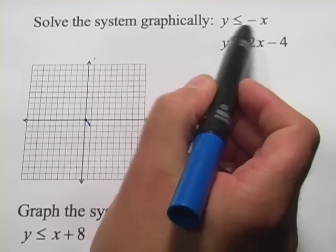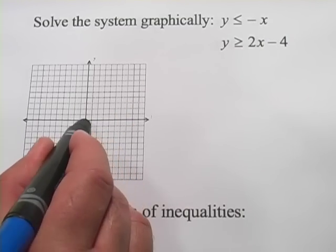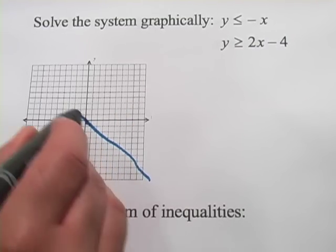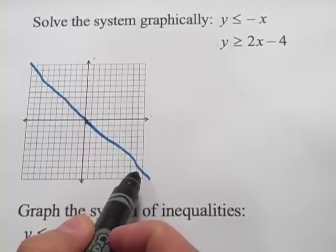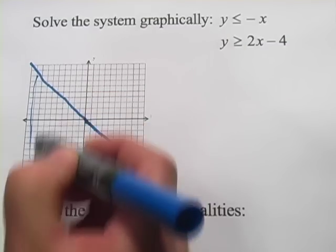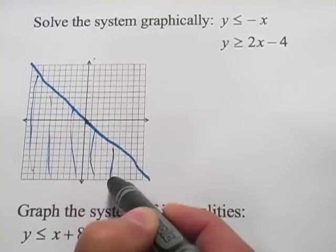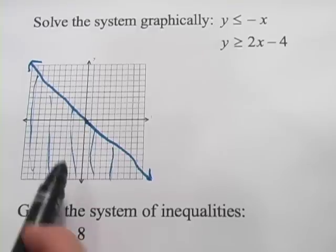Less than or equal to is going to be a solid line. Plain old less than, which doesn't include that number, is going to be a dashed line. This one's going to be a solid line, so I'll just sketch that in here. So there's my y equals negative x. Y is less than or equal to is going to be the stuff below, so it's all of this area down here. So there's our first inequality.